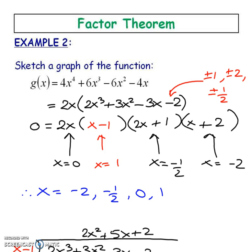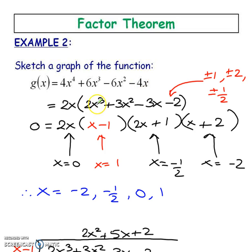Let's go over two more examples. The question asks us to sketch a graph of the function, which means I'm going to have to break this down and factor it. It looks like all terms can be divided by a 2 and all can be divided by an x, so let's take that out as our first factor using greatest common factor. You always want to do that first — if you can pull something out in common, always do that. Now I'm left with something that I don't immediately know how to break down.